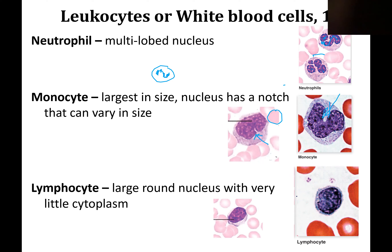Lymphocytes are the second most numerous of the leukocytes, and they have a very large round nucleus and very little cytoplasm. You can see that small amount of cytoplasm down here. That's how you tell the difference between a monocyte and a lymphocyte — because even if a lymphocyte has a slight notch in the nucleus, it can't be a monocyte because it doesn't have very much cytoplasm.